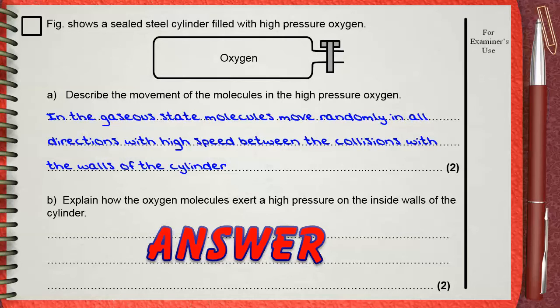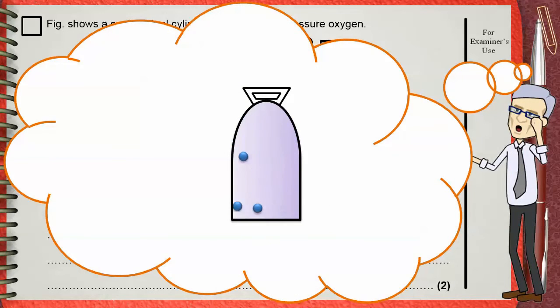Again, let's have a look at the molecules inside the cylinder. The random and fast motion causes continuous hitting on the inner walls of the container by the molecules. This causes a net outwards force on the walls of the cylinder.